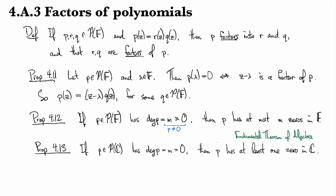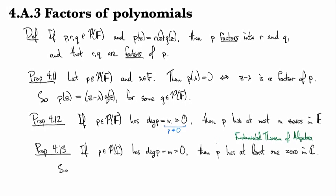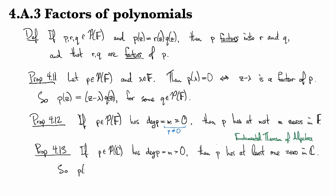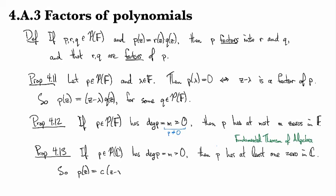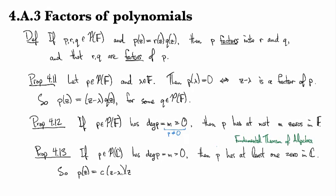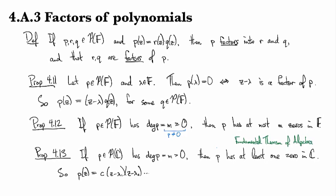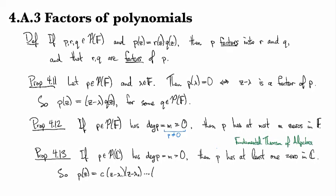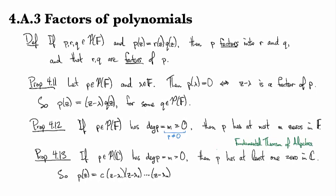The thing that's used most often is a corollary that follows from this basically immediately, which is that P factors as a product of linear terms like this, and this follows immediately from the first part that I mentioned.